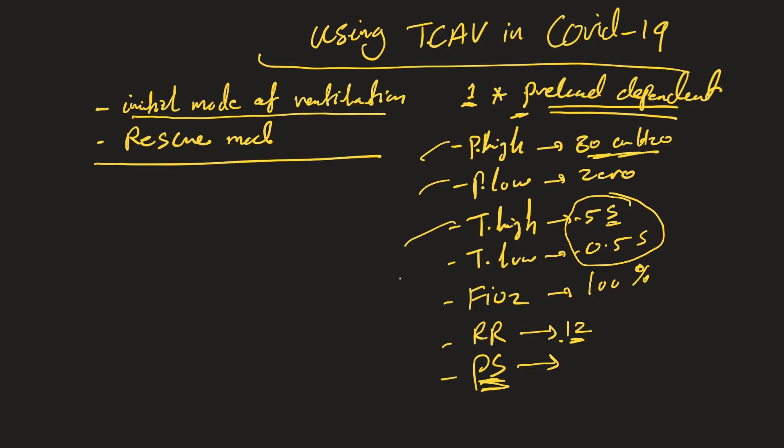But if we decide to give pressure support for these extra breaths, I suggest using something called ATC, automatic tube compensation. Basically, there's a software in the ventilator where you put the size of the ET tube and the ventilator will automatically measure the resistance and give pressure that's adequate to overcome the ET tube resistance.